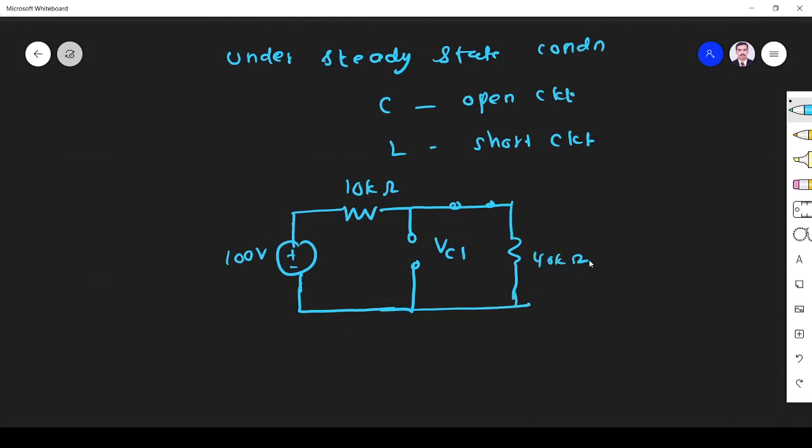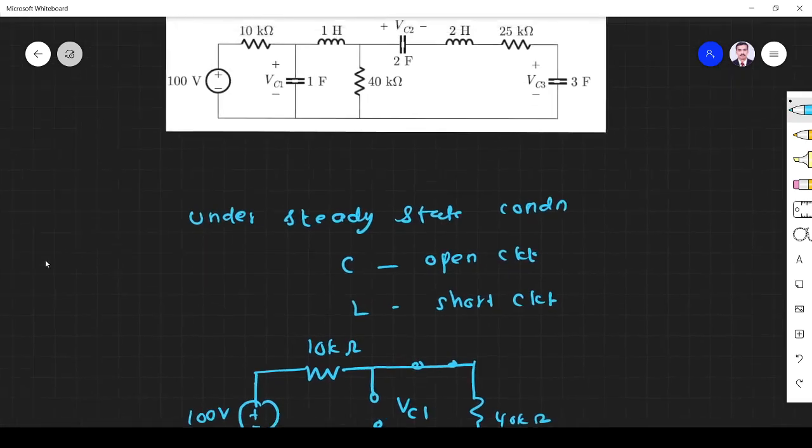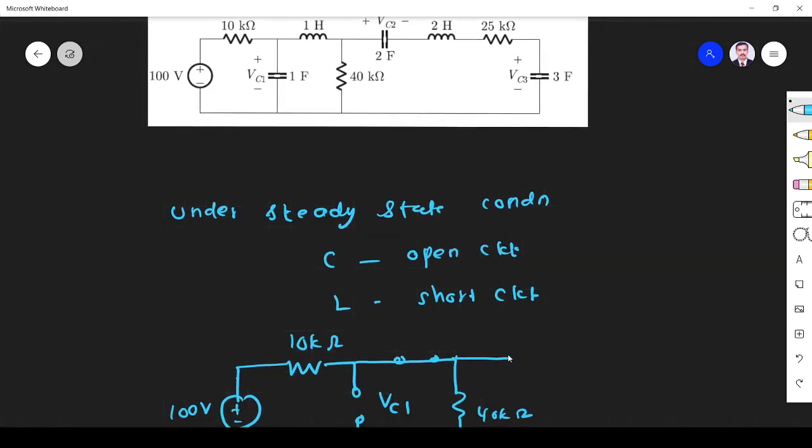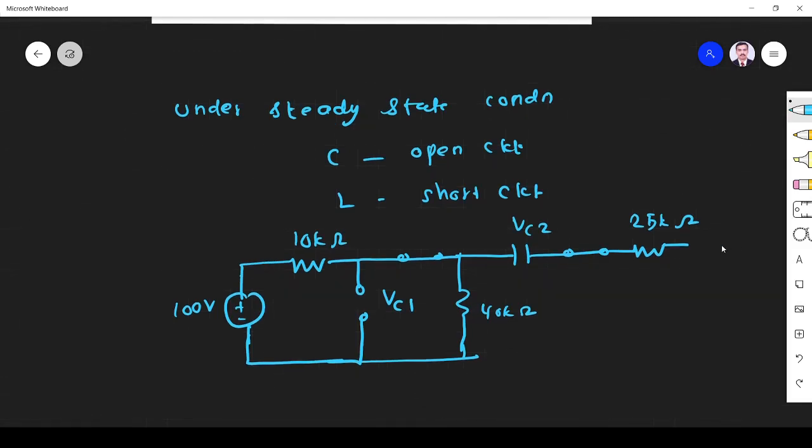Next what happens? VC2, the capacitor is VC2, the capacitor is again open so here it is VC2. Inductor is short, then 25 kilo ohm, it is 25 kilo ohm and VC3 short. This is 25 kilo ohm, this is 3 micro farad, this is 2 micro, it is not, it is short. It is open.